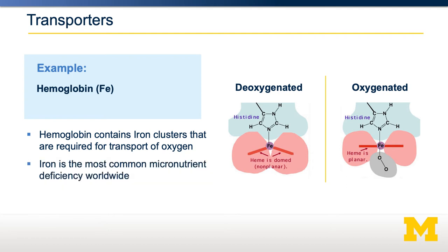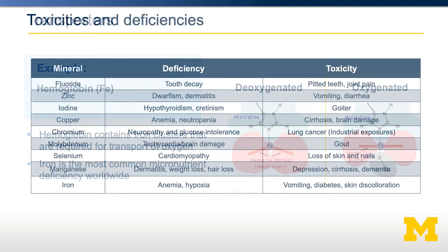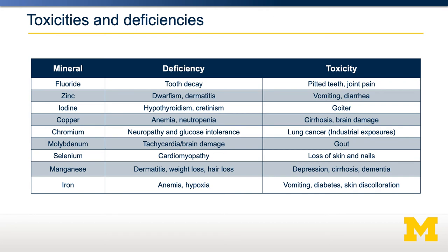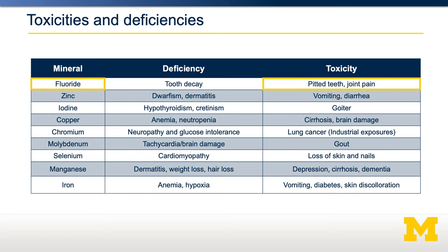In fact, iron deficiency is the most common micronutrient deficiency worldwide. All minerals that have an adequate intake or recommended daily allowance are associated with some particular physiological deficiency. For example, lack of fluoride can result in tooth decay, or lack of iron can result in anemia or hypoxia. However, minerals can also build up to too-high levels and result in toxicities. Too much fluoride, for example, can result in pitted teeth or joint pain due to aberrant bone growth.